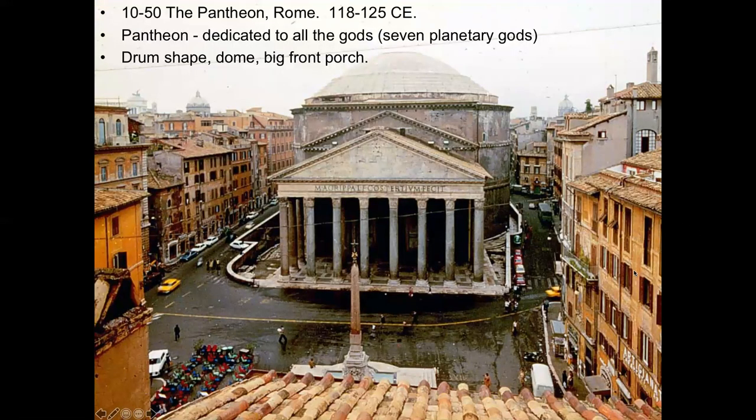This is the Pantheon in Rome, and we're getting towards the height of the Roman Empire. 'Pantheon' simply means 'all gods,' and it was dedicated to all the gods — specifically the seven planetary gods. In the ancient understanding, the planets would be the Sun, the Moon, and the five planets known to the ancients: Mercury, Venus, Mars, Jupiter, and Saturn.